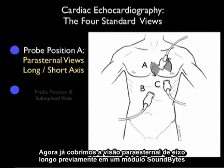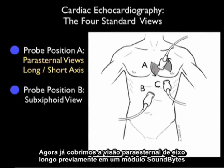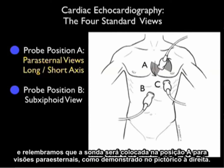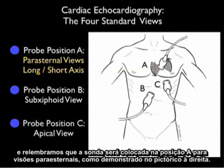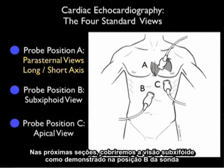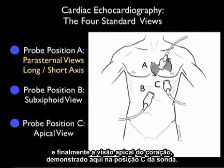We've covered the parasternal long axis view of the heart previously in the SoundBytes module. Recall that the probe will be positioned for the parasternal views in position A, as shown in the pictorial to the right. In upcoming segments, we'll cover the subxiphoid view shown in probe position B, and finally the apical view of the heart shown in probe position C.